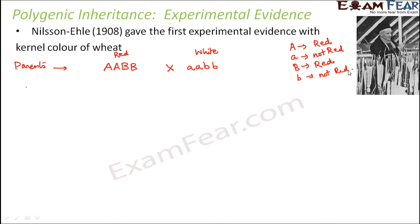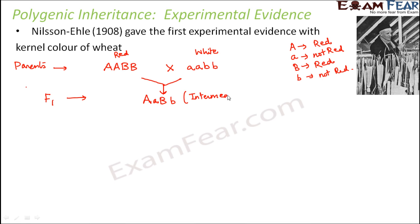With this idea in mind, let's see what happened in the F1 and F2 generations. He found that in the F1 generation, the plants obtained were of the genotype capital A, small a, capital B, small b. So unlike the monogenic pattern of inheritance, in this case they were not all red in color. In fact, their shade of red was slightly lighter — basically an intermediate color between red and white. It was a slightly pinkish shade, neither dark red nor completely white.